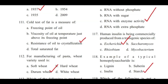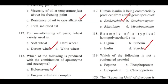Question 119: Which of the following is not a conjugated protein? — Peptone, phosphoprotein, lipoprotein, or chromoprotein? Answer is A, peptone.